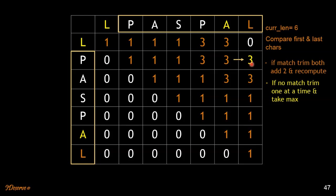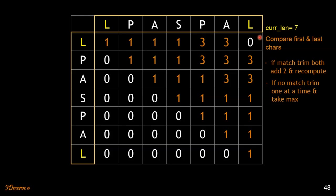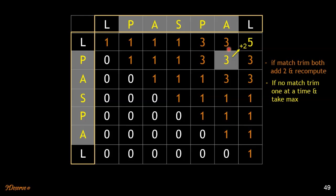Let's look at the substring of length 7, which is the whole string. The first and last characters match. We trim out the first and last characters and the remaining substring is PASPA. We take the LPS of PASPA, which is 3, and add 2 to that. We get 5 as the length of the longest palindromic subsequence.